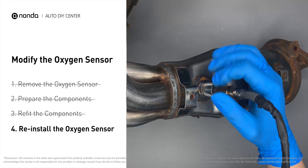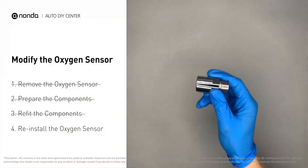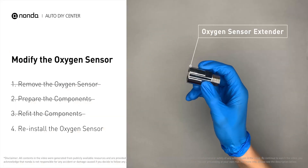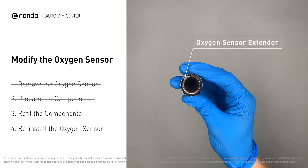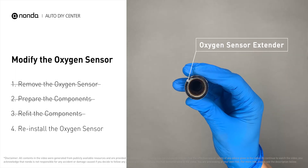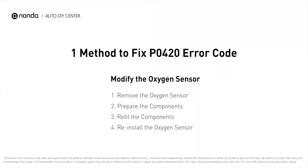If you find refitting the component is too complicated, you can also get some parts like an oxygen sensor extender or oxygen sensor socket to create that space. Here is a practical solution to fix the P0420 error code.